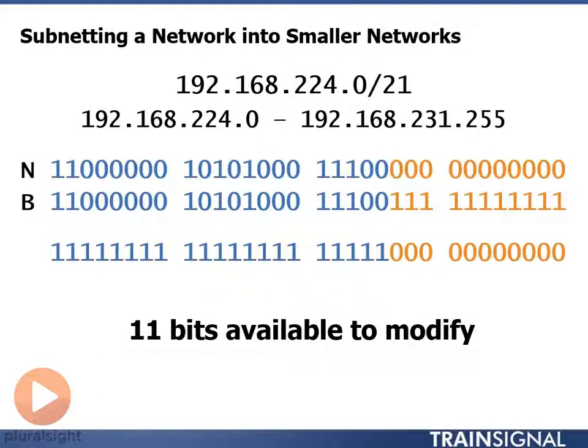First thing we're going to do once again, convert into binary. We're going to convert our given information into binary, find out our range. Here we have 192.168.224.0 through 192.168.231.255 as our range of addresses.